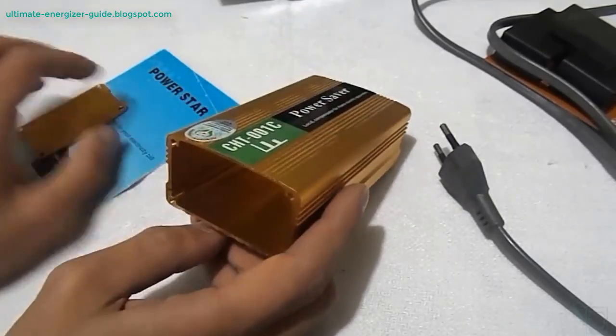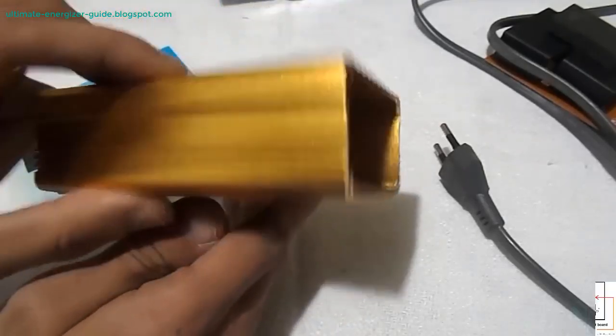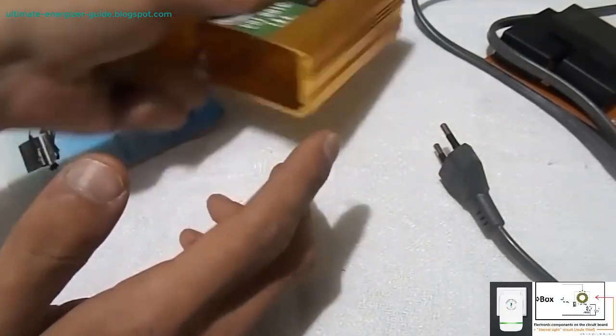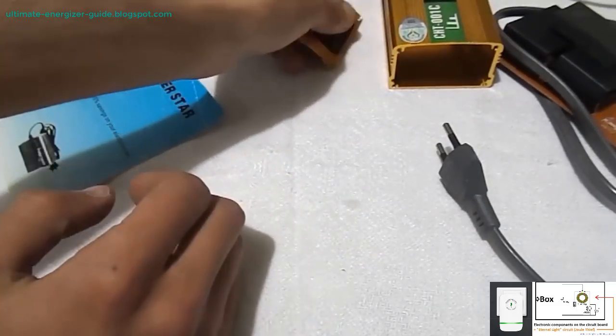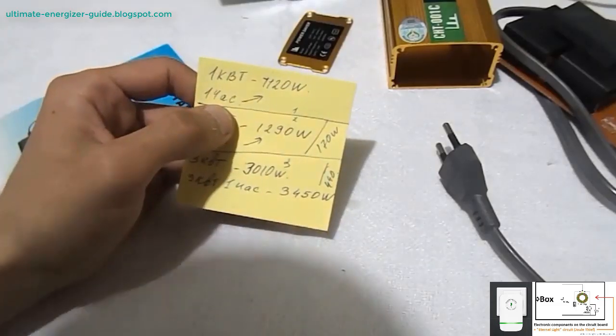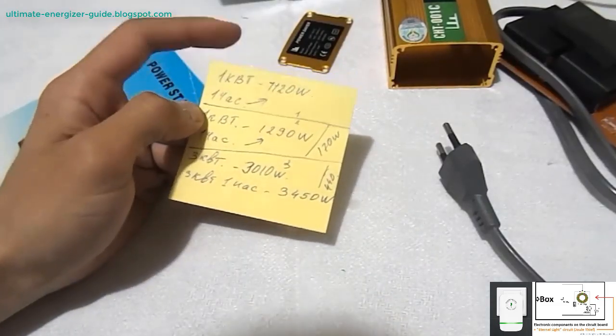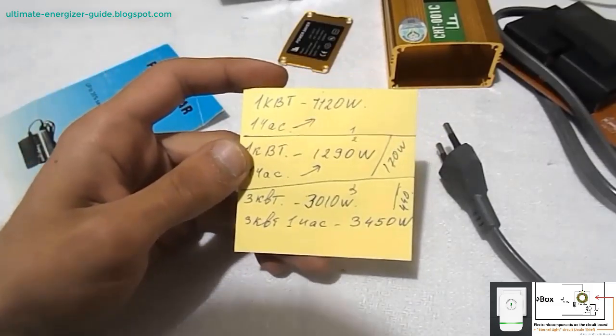The reality of electricity saving boxes in practice: many of the cheaper electricity saving boxes available on the market do offer some level of energy savings, but the reduction in electricity bills is often minimal. These devices typically operate by reducing power surges, correcting the power factor, or filtering out noise from the electrical system.